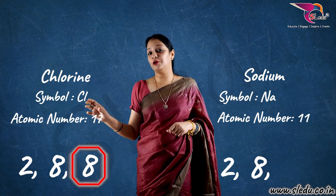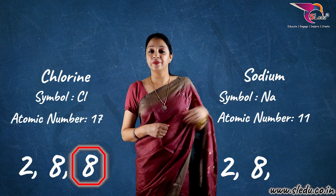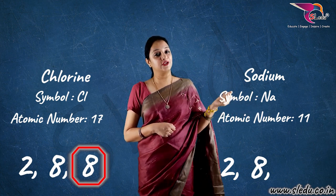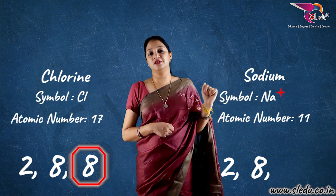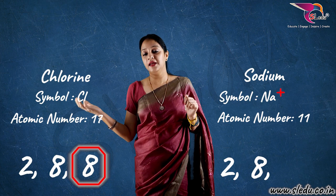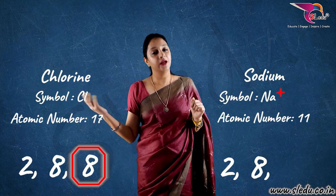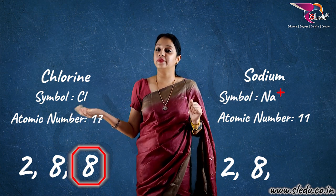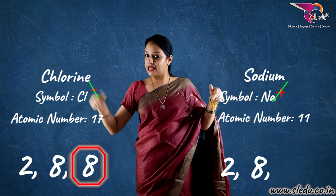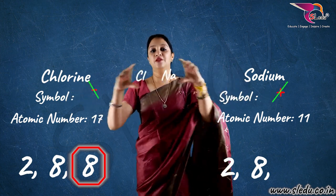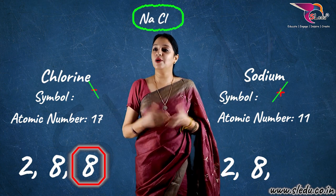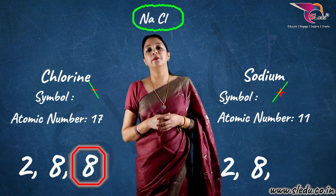Sodium gave its one electron to chlorine, and chlorine took one electron. Now, because sodium gave away one electron, it gets Na positive charge. On the other hand, chlorine on my left side — it gained one electron, so it gets a negative charge. Now, since Na positive and Cl negative, these cancel out, and the formula together becomes NaCl.